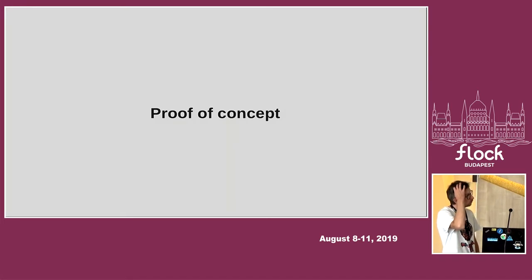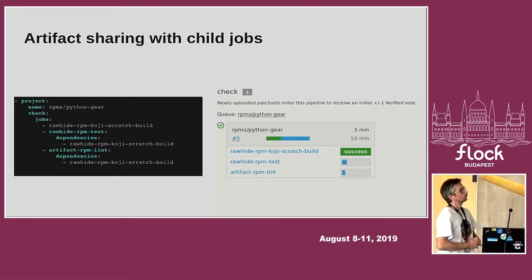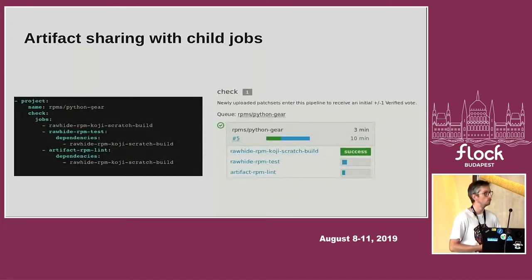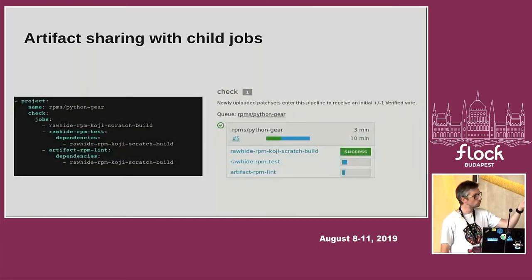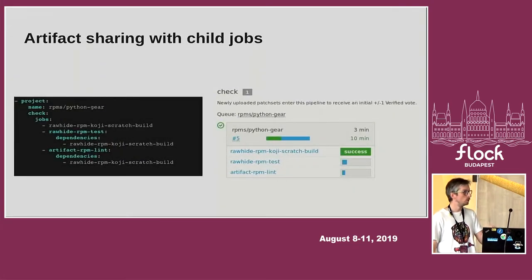Now let's talk about the proof of concept. We wanted to experiment with the Pagure driver of Zuul in an RPM packaging context. The first scenario is artifact sharing with child jobs. We wanted to build a package with a parent job and share the RPM package with child jobs that would validate the built package. On the right side of the slide, you see a change box from the Zuul status page showing jobs in progress for pull request 5 on the Python-gear repository — a dist-git repository. The first job, RohideRPMKojiScratchBuild, builds a scratch build on Koji, retrieves the RPM artifacts, and creates a local repository on the test node.